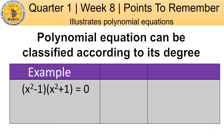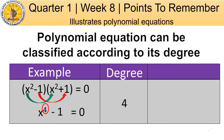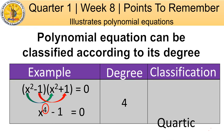Another example: (x² − 1)(x² + 1) = 0. The polynomial is written in factored form as the sum and difference of two binomials. To find the degree, multiply the first terms of each binomial: x² × x² = x⁴, and the last terms: −1 × +1 = −1. The equation is equivalent to x⁴ − 1 = 0. Since 4 is the highest exponent, the degree is 4 and the classification is quartic.